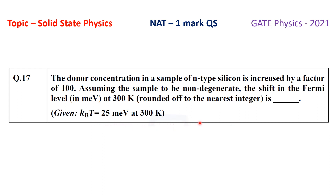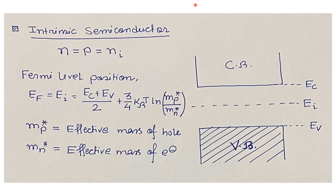In an intrinsic semiconductor, the electron density in the conduction band and the hole density in the valence band are equal, denoted by ni, the intrinsic carrier density. The Fermi level for this intrinsic semiconductor is given by: Ei = (EC + EV)/2 + (3/4)·kBT·ln(mp*/mn*), where EC is the conduction band edge energy and EV is the valence band edge energy.